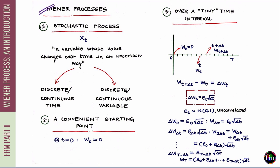Let's first understand what a stochastic process is in general. Think of a stochastic process as a variable whose value changes over time in an uncertain way. We denote it as x subscript t, where x denotes the random variable and t denotes the time at which a particular value has been observed. Now x can be discrete or continuous, and t can also evolve in a discrete or continuous way. This gives us four categories of stochastic processes: discrete variable discrete time, discrete variable continuous time, continuous variable discrete time, and continuous variable continuous time.